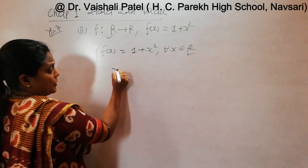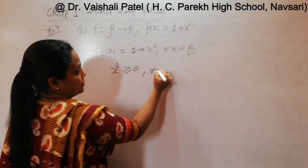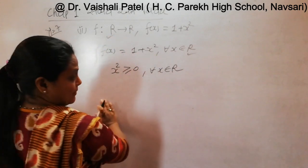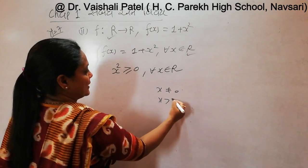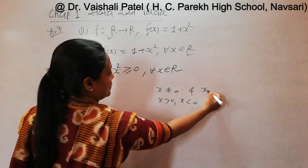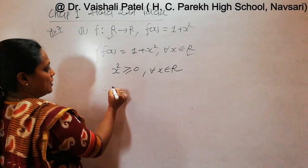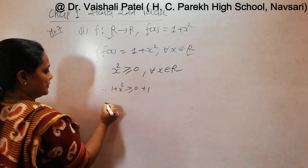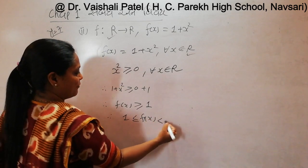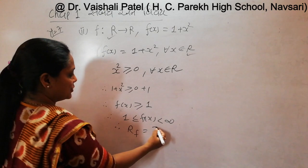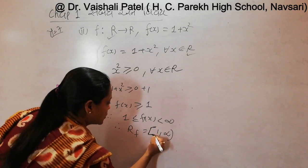We will look at x squared, which is greater than or equal to 0 for all x belonging to R. So f of x is equal to 1 plus x squared is greater than or equal to 1. Therefore, 1 is less than or equal to f of x, which is less than infinity. Therefore, the range of f is equal to the closed-open interval [1, infinity).